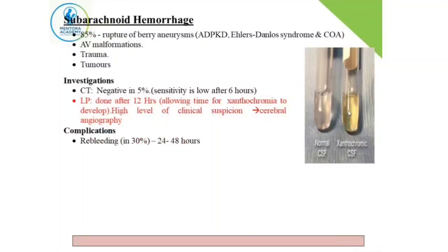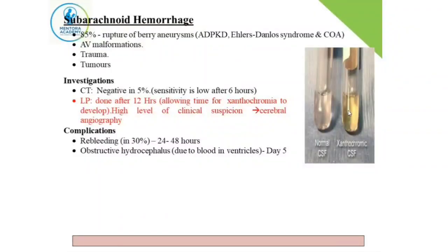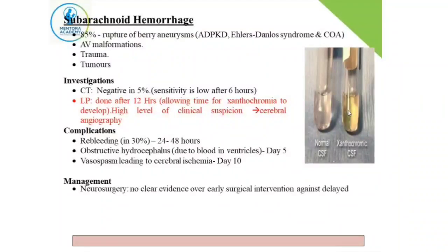Complications of subarachnoid hemorrhage include re-bleeding, which is quite common up to 48 hours after the rupture. Because the CSF is filled with blood, CSF flow is obstructed, resulting in hydrocephalus — enlargement of the ventricles, including the lateral and third ventricles. Later, blood within the CSF can irritate the arteries, causing vasospasm, which is a complication appearing around a week after the event.